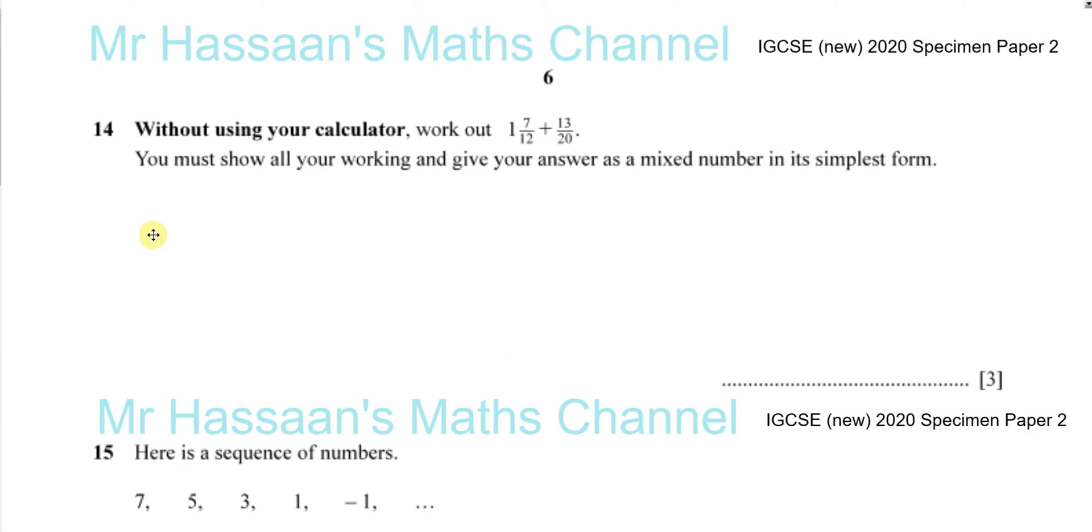Okay, now for question number 14 from the specimen paper for 2020 IGCSE Cambridge exam. Without using your calculator, work out 1 and 7/12 plus 13/20.